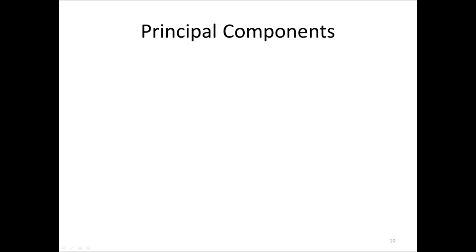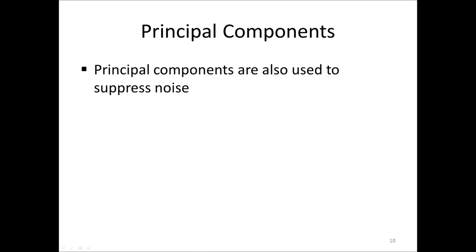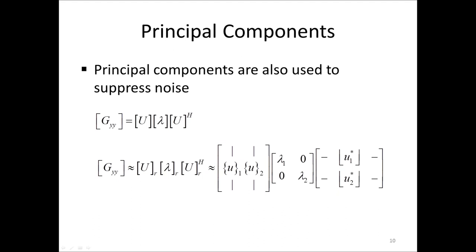Another use of principal components is to reduce the order of the system, most commonly to suppress measurement noise. We start with the full matrix GYY, decomposed into the full-size U and lambda. We then approximate GYY by removing a number of eigenvalues and their corresponding eigenvectors, since zero eigenvalues do not contribute to GYY. Each eigenvector U_K is still full length, so the size of GYY does not change. In the ideal case where the lowest eigenvalues are just due to noise, this is an efficient noise reduction method, commonly used in modal analysis applications.